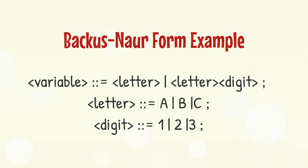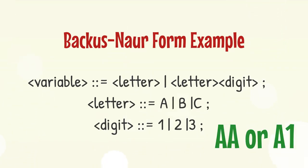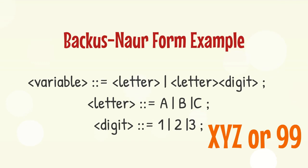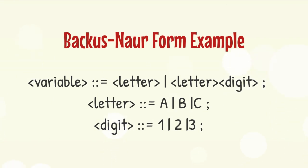So, according to this BNF, variable names A, A1 are correct. But X, Y, Z, or 99 are not correct, because X, Y, Z, and 9 are not defined as letters or digits.